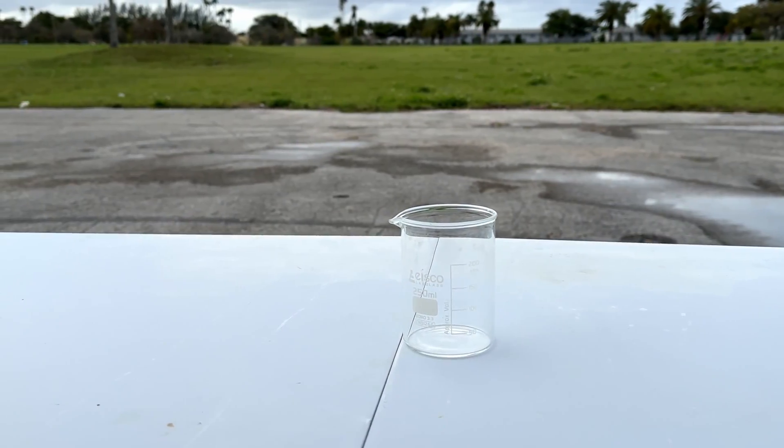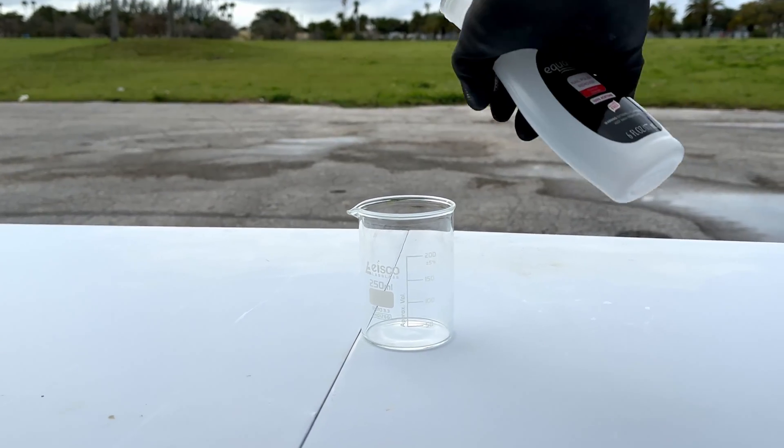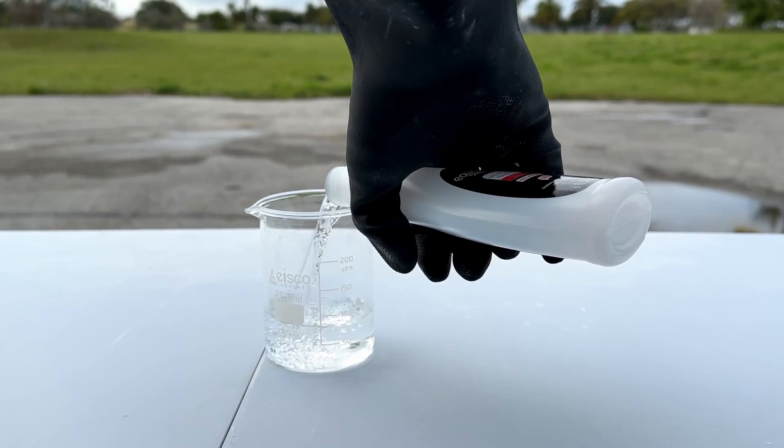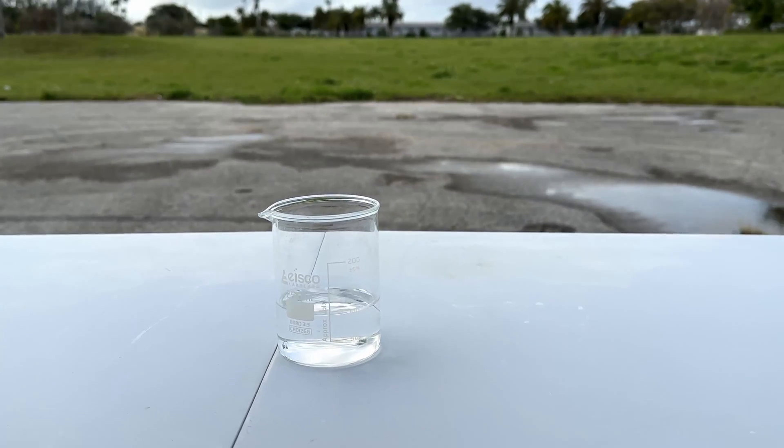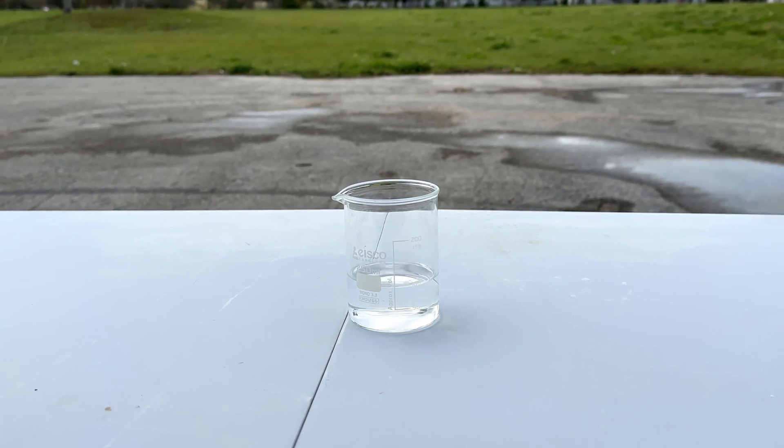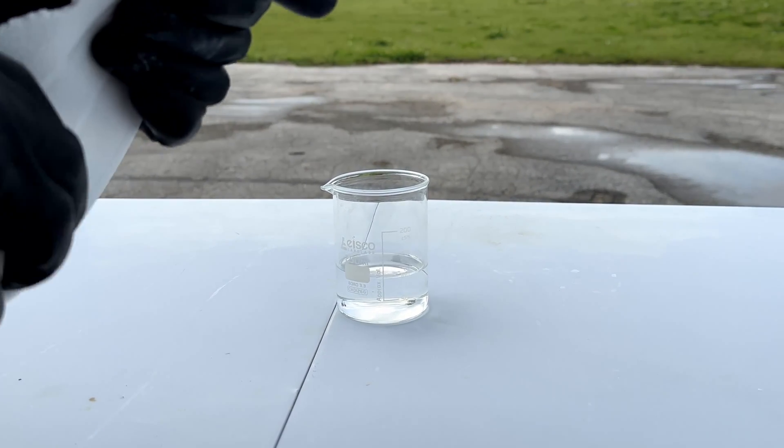We're going to start off with 100 milliliters of acetone. At first it looks rather innocuous, but this is actually a big enemy of styrofoam.